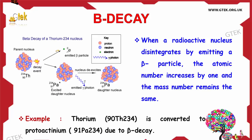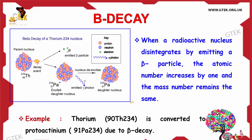The picture on the left side shows the Beta decay of a Thorium-234 nucleus. The parent nucleus Thorium-234 undergoes a decay event, during which Protactinium is generated and a Beta particle — which is essentially an electron — is emitted.